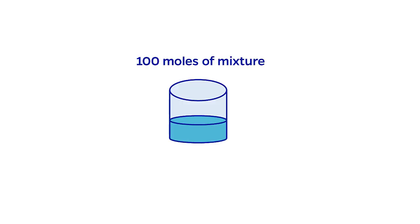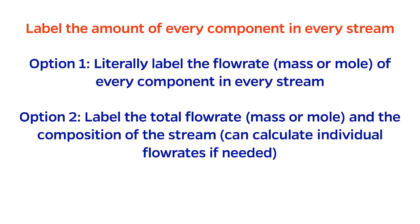If this math sounds confusing to you, consider a short example. If you had 100 moles of a mixture and the mixture contained 40 mole percent water, we could say that there are 40 moles of water in the mixture. Therefore, this all represents a second valid path towards block flow diagram labeling. We can label both the total amount of the stream and the composition, with the understanding that we can convert this to a molar amount at any time.